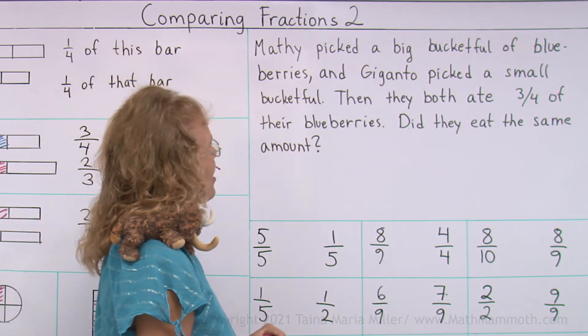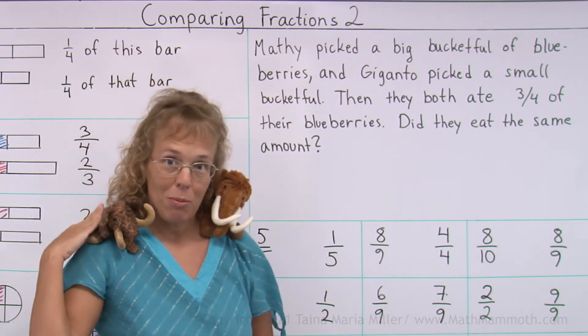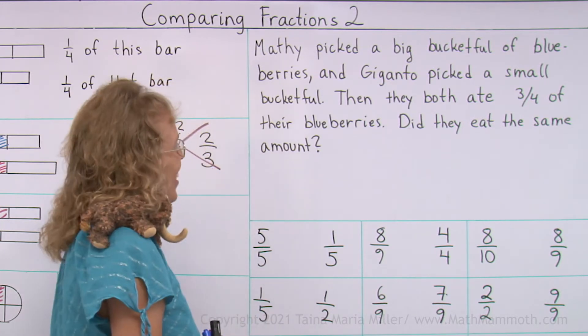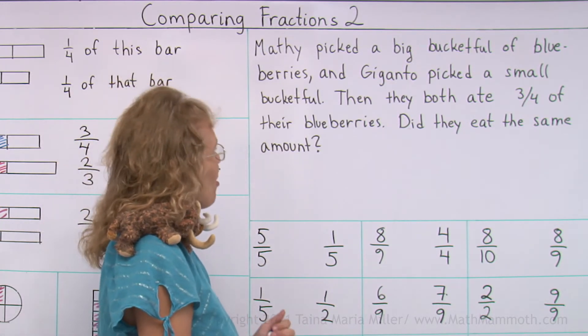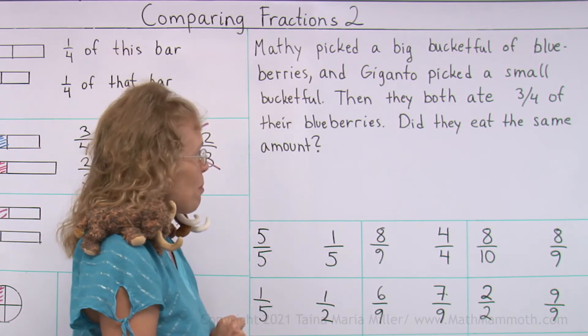Let's read. Mathie picked a big bucket full of blueberries and Giganto picked a small bucket full of blueberries. Yeah, because he's smaller. Then they both ate three-fourths of their blueberries. Did they eat the same amount?